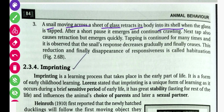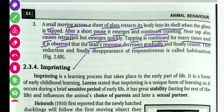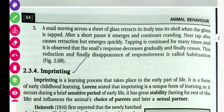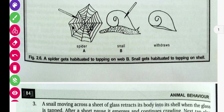A snail moving across a sheet of grass retracts its body into itself when the grass is tapped. After a short pause it emerges and continues crawling. The next tap also causes retraction, but it emerges more quickly. As tapping is continued many times, it is observed that the snail's response decreases gradually and finally disappears. This reduction in responsiveness is called habituation.